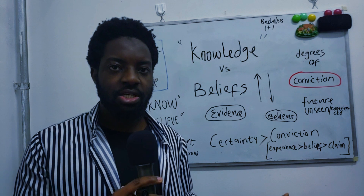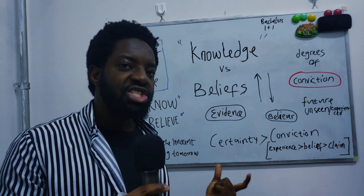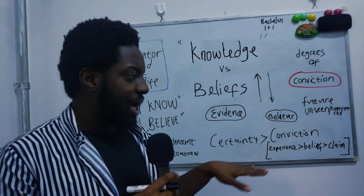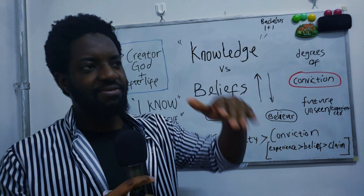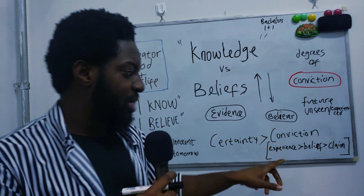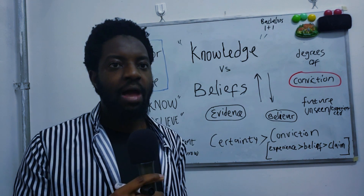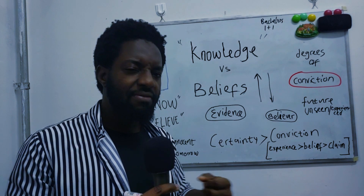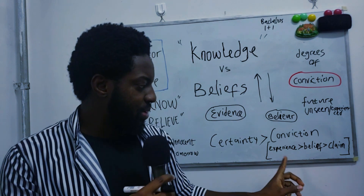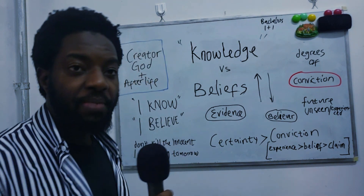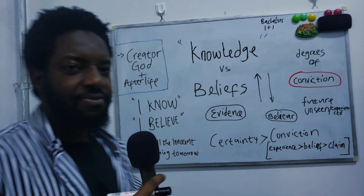Certainty is greater than conviction. If something is absolutely certain, it cannot change — it's irrefutable, it's necessary. Conviction, however, comes in different levels. I believe I exist, I believe there's an external world, I believe there are other people — those are beliefs but much stronger than a mere claim. Experience is even stronger: if I was there yesterday when something was said, that's a stronger belief than hearsay. But experience, belief, and claim are all still beliefs — you haven't reached certainty yet. Being very convinced of something cannot guarantee certainty.